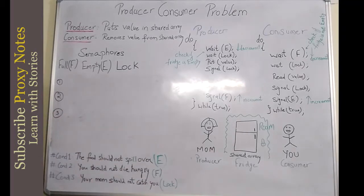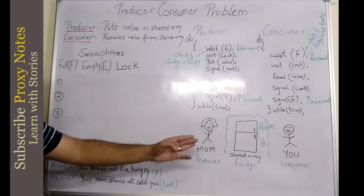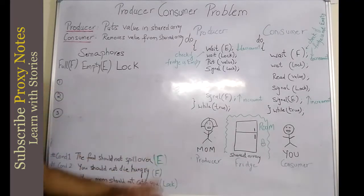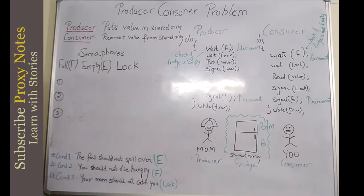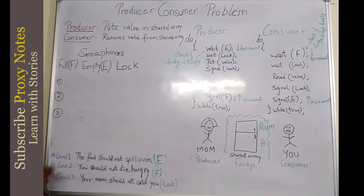This is the backdrop story. Now let's understand the problems in the producer-consumer context. Problem number one: the food should not spill over. Your mom should know when the fridge is going to be full; otherwise she will keep on stuffing the fridge and after a point the fridge is going to burst open with food wasted on the floor. Your uncle is going to be sad, your mom is going to be mad, and you are going to stay hungry.